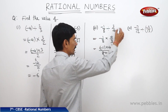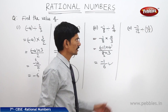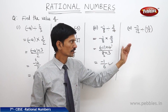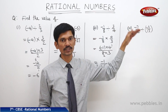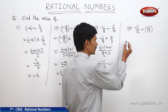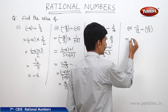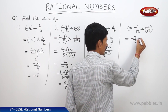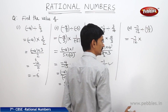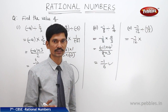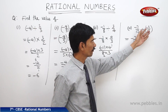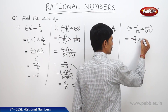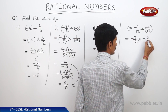Now the next question has two negative rational numbers: a negative rational number divided by another negative rational number. We do the same process. The first rational number is minus 7 by 12. We write the division symbol as multiplication, then write the reciprocal of the second fraction. The reciprocal of minus 2 by 13 is minus 13 by 2, so we write minus 13 by 2.